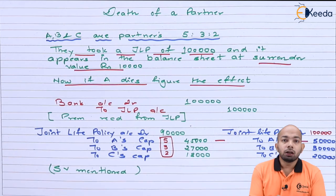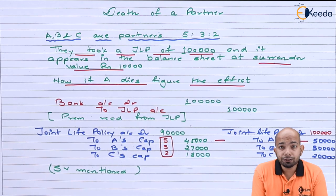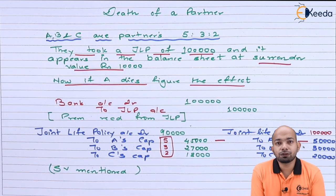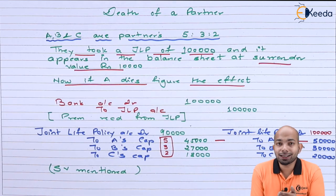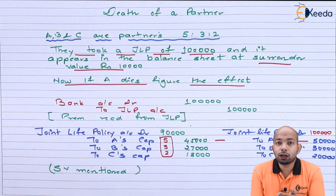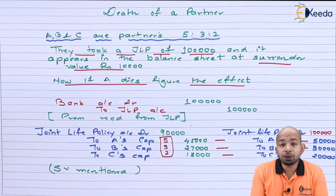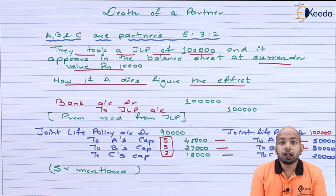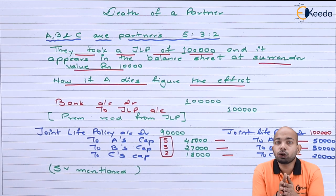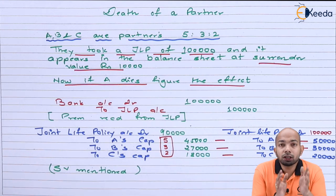If you can see the difference between the payments being made towards individual partners' capital — as a firm, there is a massive difference. In the first case, we pay 45,000 to A's capital, meaning 5,000 less compared to if it is not mentioned at surrender value. Accordingly, 3,000 less for B and 2,000 less for C. This is the difference between mentioning it at surrender value versus not mentioning it at surrender value.